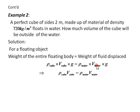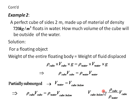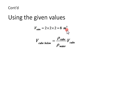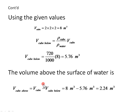When the G's cancel out, density of the cube times volume of the cube equals density of water times volume of water. For a partially submerged body, the volume of displaced water equals the volume of the cube below the surface. Therefore, volume of the cube below the surface equals density of cube over density of water times volume of cube. The volume is L³ = 2³ = 8 cubic meters. Substituting: 720 over 1000 times 8 gives 5.76 cubic meters below. The volume above surface is 8 minus 5.76, which equals 2.24 cubic meters.